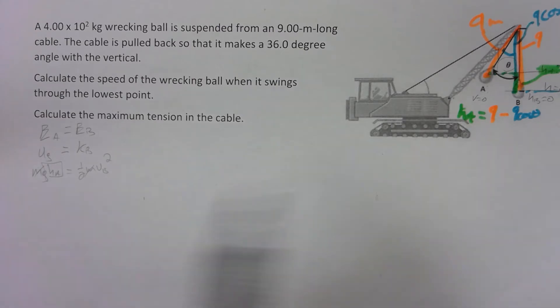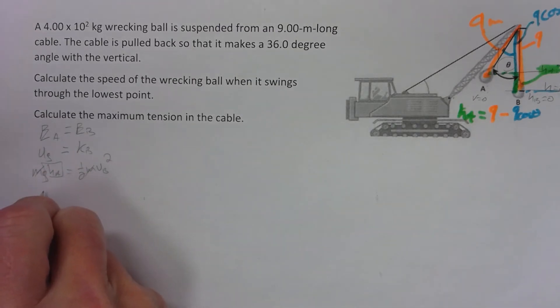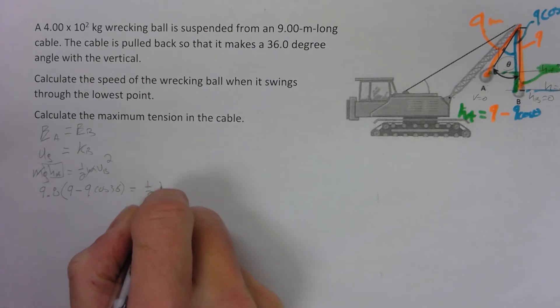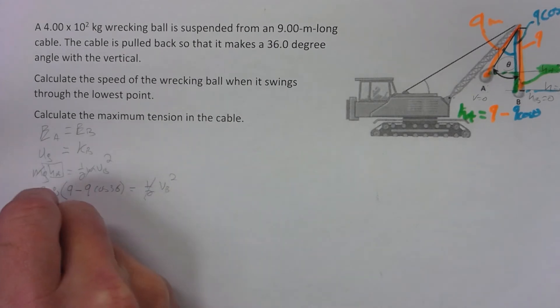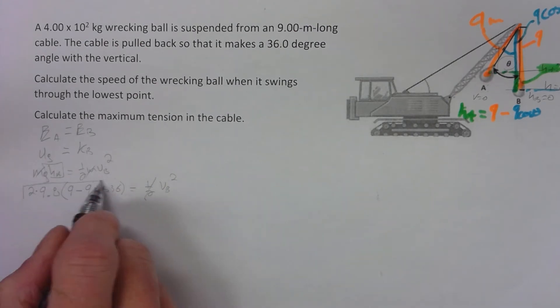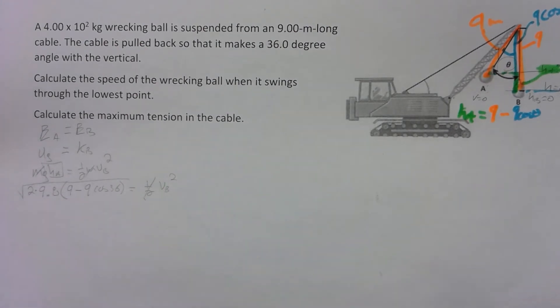So there we go. So that height, so over here we've got g, which is going to be 9.8, 9.8 times nine minus nine cosine 36. That's going to equal one-half v_b squared. Multiply by the two, right, put two over here, and take the square root of all that. And we've got our answer. That's how we figure that out.